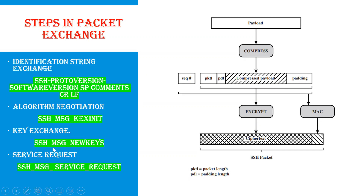Finally, the service request step: the end of key exchange has a message SSH message new keys. The client then sends a service request message to request the user authentication or connection protocol — the next protocol that has to be followed to completely satisfy the SSH architecture. This service request will request for the next protocol.